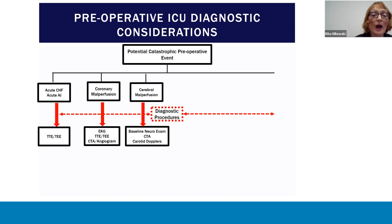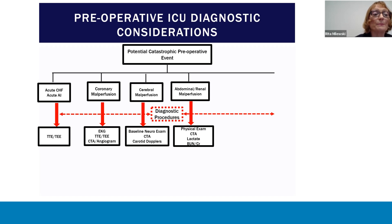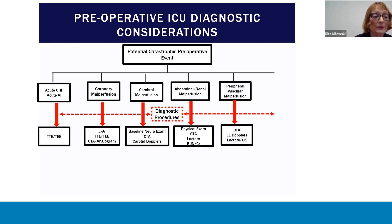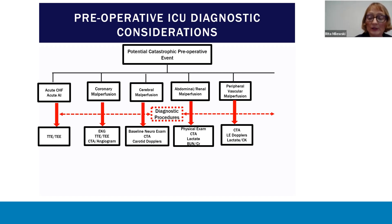Neurologic exam assessment should occur both preoperatively and postoperatively. The identification of abdominal or renal malperfusion requires performing serial abdominal exams and checking serial lactate, creatinine, and liver function tests, again both preoperatively and postoperatively. The identification of peripheral malperfusion also requires serial exams to assess perfusion, and bedside Dopplers, lactate, and CK should be obtained to identify the need for potential fasciotomy and to avoid rhabdomyolysis.